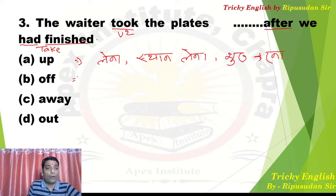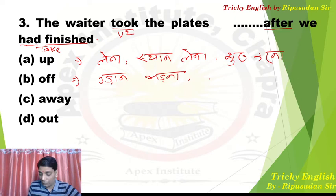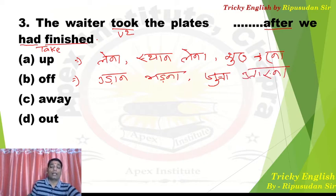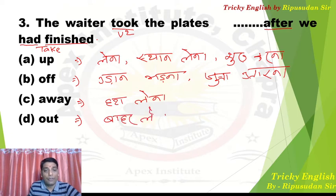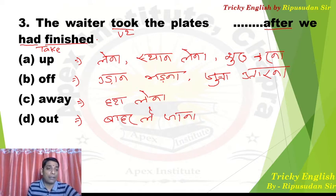'Take off' is used in two senses: one means to take flight, and the second means to remove shoes. This has been asked many times in exams. People mistakenly use 'put off' for removing shoes, which is completely wrong. You can use 'put off' for clothes or a coat, but never for shoes. 'Take away' means to remove. 'Take out' means to take outside. So the waiter removed the plates — answer for Q3 is C.